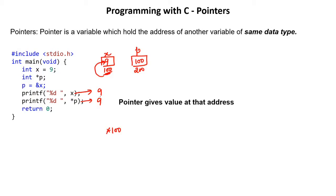So the next definition of pointer is: the dereference operator (*) gives the value at that address — the actual value stored at that particular address.